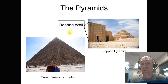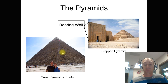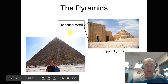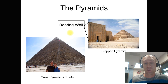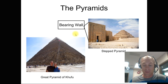The earliest really large structures were pyramids, built as tombs for the pharaohs. The earliest known architect was Imhotep of Egypt, known for creating the pyramid at Saqqara around 2700 BC — a very long time ago.